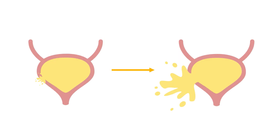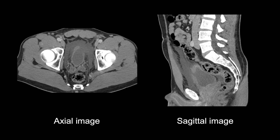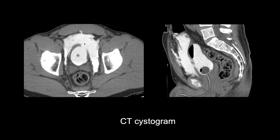Extraperitoneal bladder rupture can range from a very subtle to a large defect. This patient's trauma scan has quite a lot of fluid accumulating outside the front of the bladder in the pre-vesicle space or space of Retzius. This fluid has a simple fluid density of 15 Hounsfield units. There is a visible defect in the anterior bladder wall indicating injury. A follow-up cystogram was performed which showed a gaping hole in the bladder confirming injury. When contrast was inserted into the bladder, it leaked into the pre-vesicle space but not into the peritoneal cavity or surrounding the bowel loops.